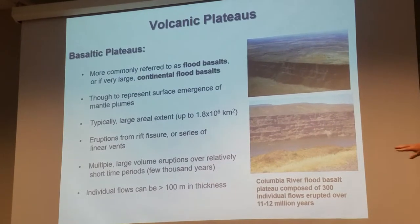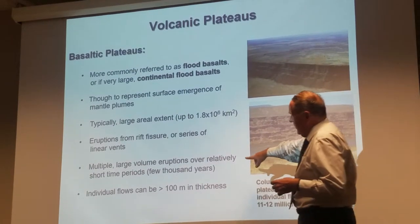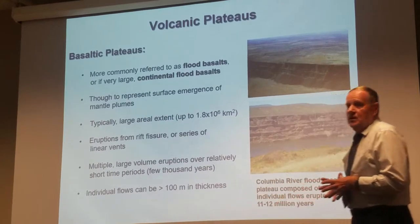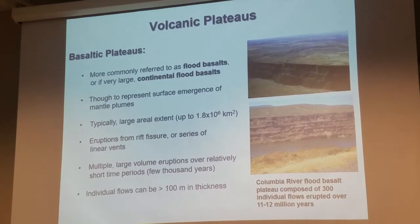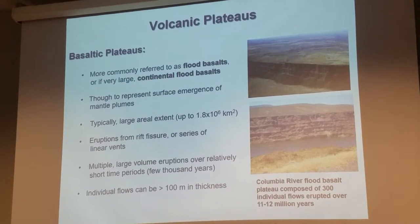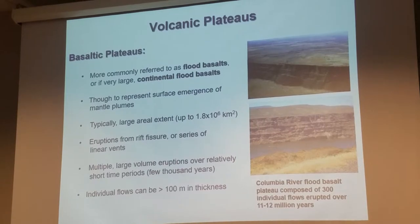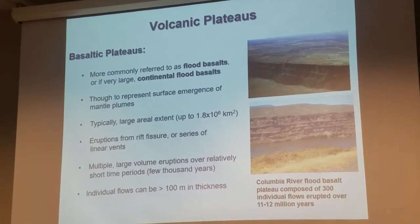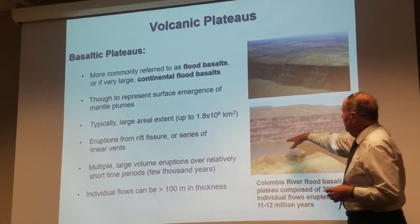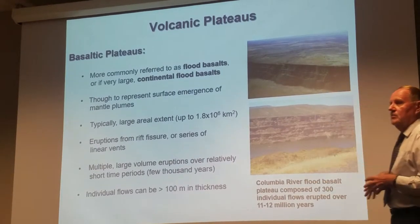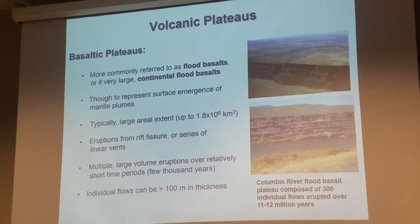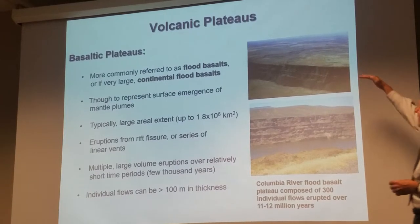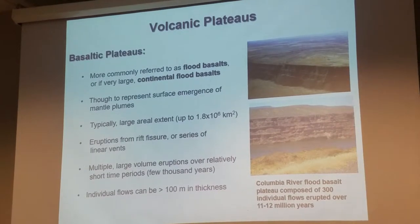So again, lots of individual flows over a relatively short period of time, and some of these flows can be greater than 100 meters — or about 300 feet — in thickness. Here's the Clunky River flood basalt. It's in sort of Oregon, southern Washington, northern Oregon. Basically this is a whole series of individual lava flows covering the land, and commonly what happens is it creates a flat plateau on top — that's why it's called a basaltic plateau.